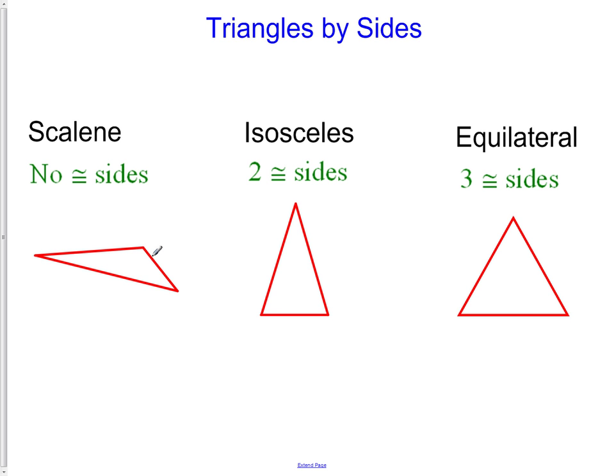With a scalene triangle, we have no congruent sides. That means all three sides have different side lengths. Remember the tick marks tell us which sides are congruent. So since all three of these sides have different measurements, they do not have the same amount of tick marks.